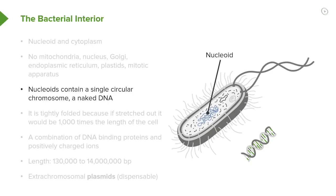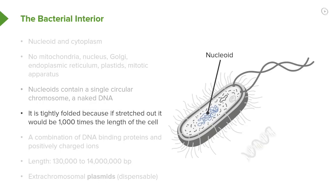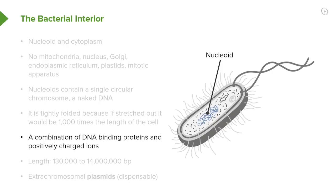The nucleoid contains the nucleic acid of the bacterium, or the genetic information. For bacteria, it's a single molecule of circular DNA. This molecule is tightly folded in the nucleoid because it's very long — in the longest DNAs, it would be a thousand times longer than the length of the bacterium unless it were compacted. So there have to be specific mechanisms to wrap it up, and that's what we call the nucleoid: a combination of proteins that bind the DNA and positively charged ions.